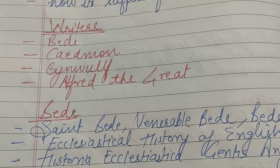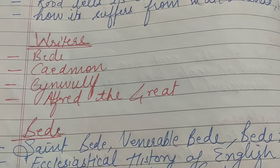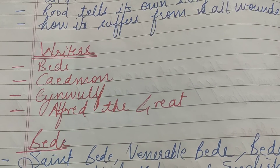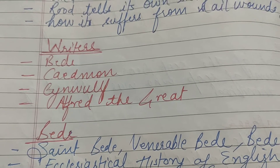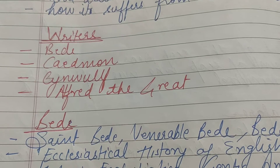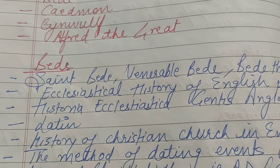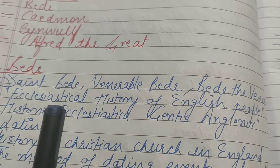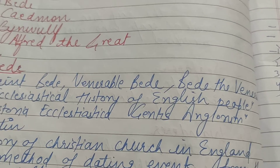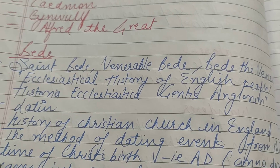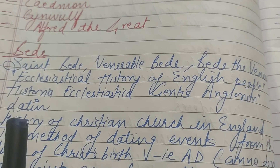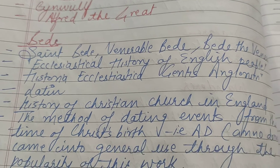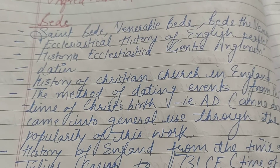Jo writers bahut hi zyada famous the wo the: Bede, Caedmon, Cynewulf, aur King Alfred. Bede Old English Literature ke pehle writer maane jaate hain, but wo Latin mein likhte the — Old English language mein nahi likhte the. Bede ko Saint Bede, Venerable Bede, ya Bede the Venerable bhi kaha jaata hai. Inhone Ecclesiastical History of English People likhi thi, but yeh Latin mein likhi thi. Iske andar History of Christian Church ke baare mein bataya rakha hai England mein.